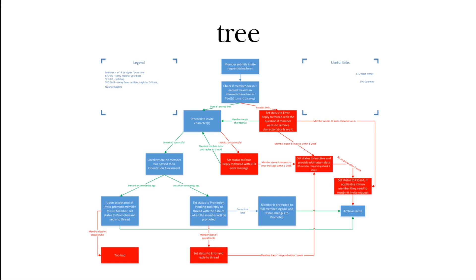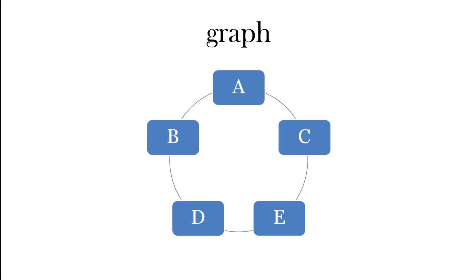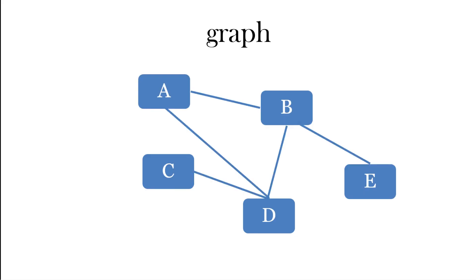Now a graph is different. A graph, if you like, is like a tree but the children can go back up. So here we've got several nodes and they're all connected, so this is kind of like a silly graph, like a circle. Here we've got another graph, so some nodes are connected and some are not, but it's not a tree. There's not one at the top, some going down.